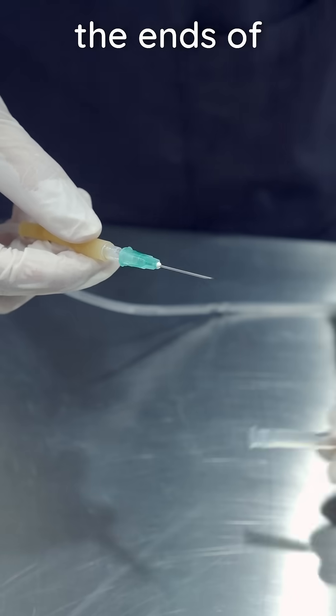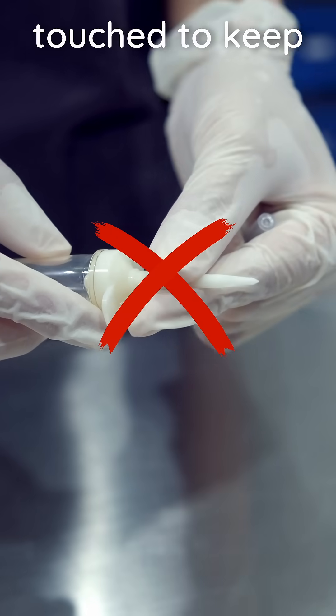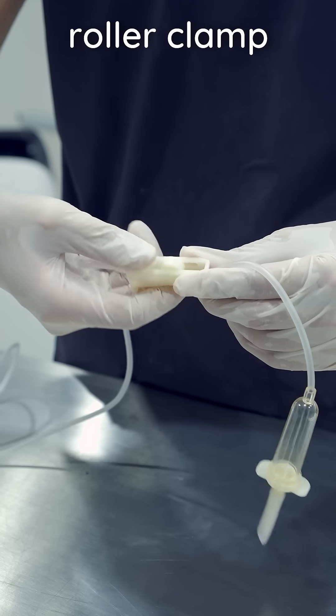Ensure sterile parts such as the ends of the set aren't touched to keep them sterile. Move the roller clamp to the closed position.